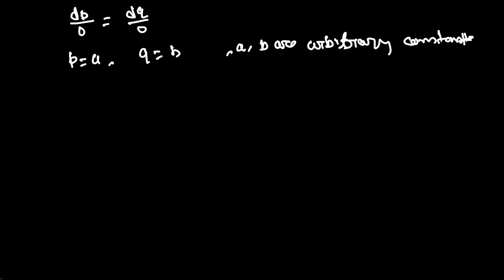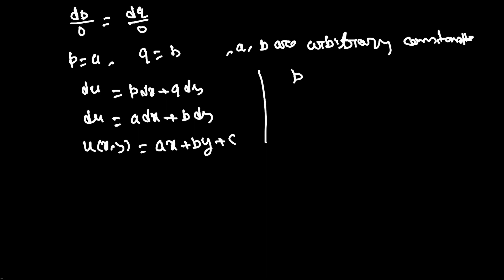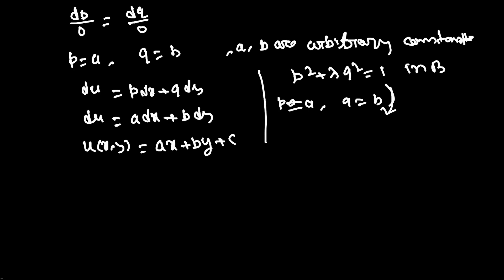Now since du = p dx + q dy, and p = a, q = b, we get du = a dx + b dy. After integrating, u(x,y) = ax + by + c, where c is an arbitrary constant. Now since p² + λq² = 1 in B, substituting p = a and q = b gives a² + λb² = 1.